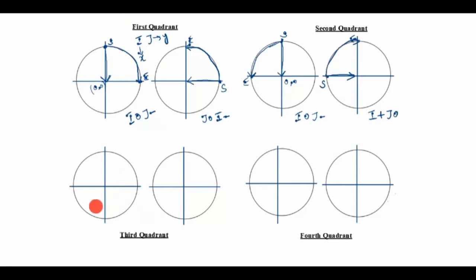Now we'll see the third quadrant. The start point is here and the end point is here, so we draw the arc. The arc goes this way, and the end point is on the Y-axis, so J is 0. For the I value, the arrow goes toward the plus side, so I is plus.